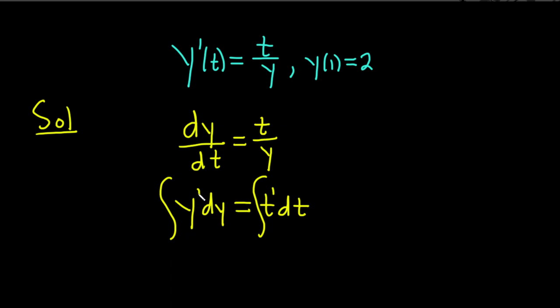The power rule says you add one to the exponent and divide by the result. So this will be y squared over 2 equals t squared over 2 plus our constant of integration capital C.